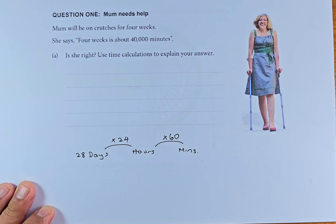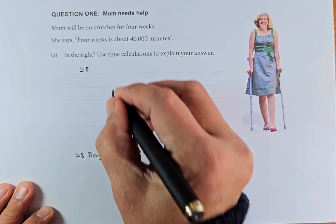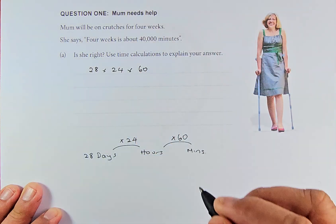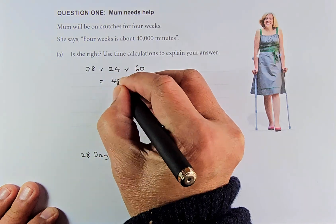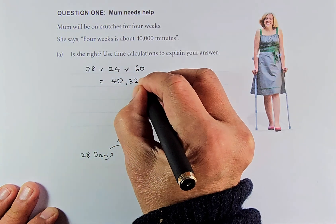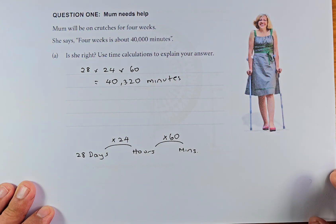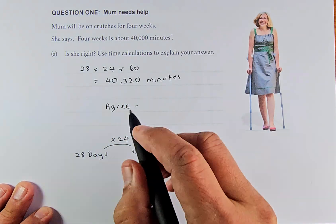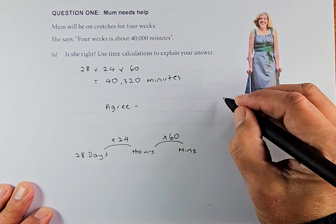To calculate how many minutes in four weeks, we take 28 days and multiply by 24, then multiply by 60. Put it in your calculator and it's going to equal 40,320 minutes. So four weeks equals 40,320 minutes. And the question asks you, is she right? You can answer both agree or disagree. If you agree, you can say that 40,320 minutes is about 40,000 minutes, and that will give you outcome three.